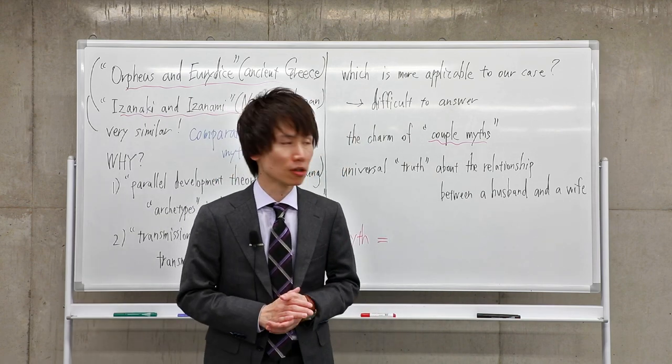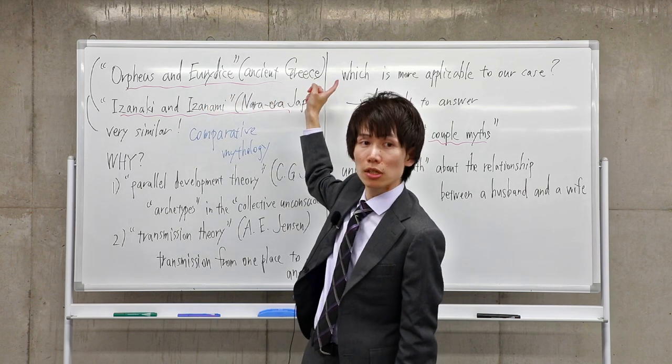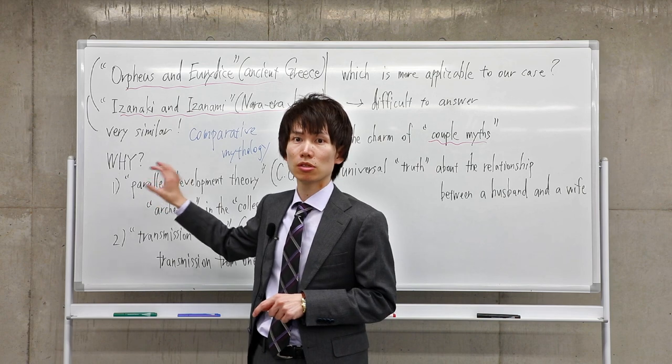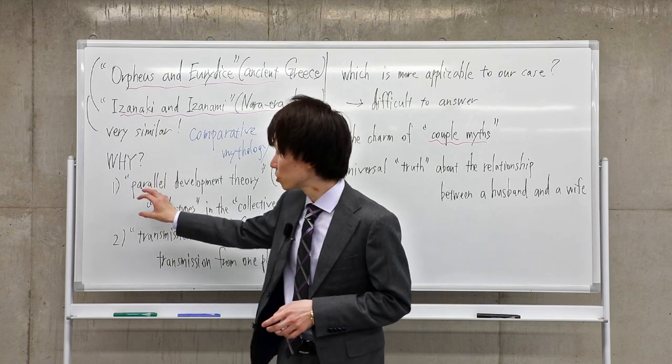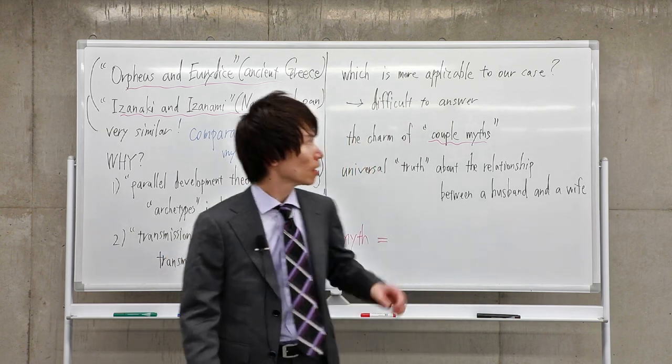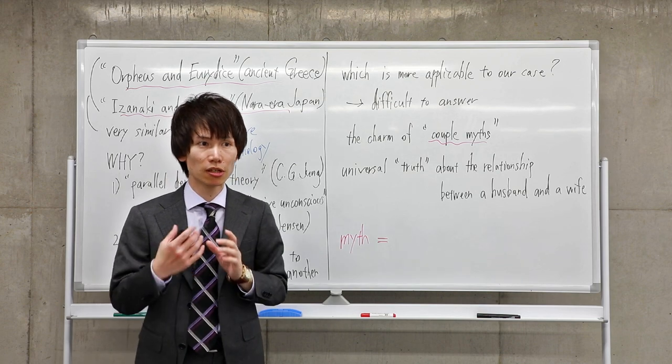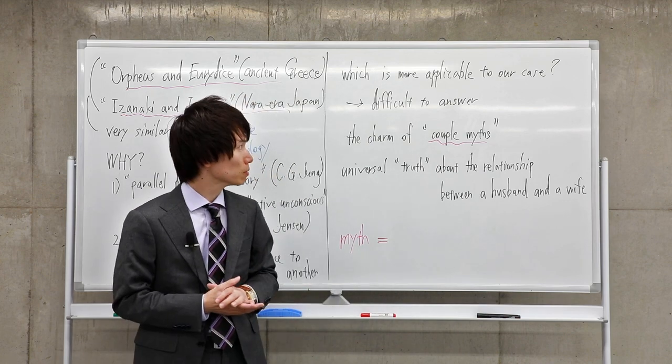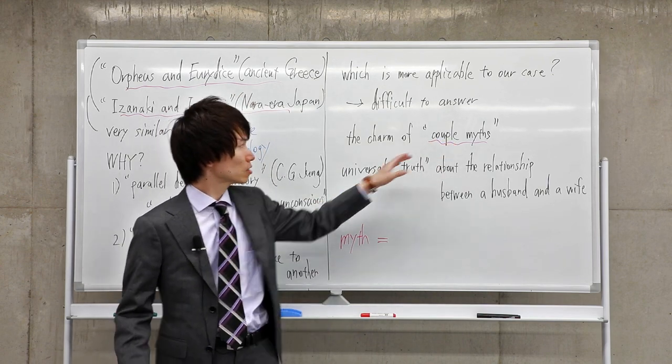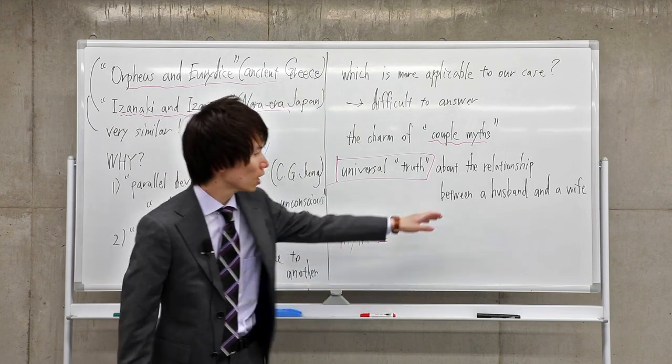So let me recapitulate today's talk. In today's talk, we looked at two different stories, one from ancient Greece and the other from Nara-era Japan. I posed the question of why these two stories are similar to each other, and I introduced two theories to answer this question: parallel development theory and transmission theory. It's very difficult or even impossible to answer this question definitively. But the important point is that they share the same story pattern. This shows that these couple myths have a universal truth about the relationship between husband and wife.